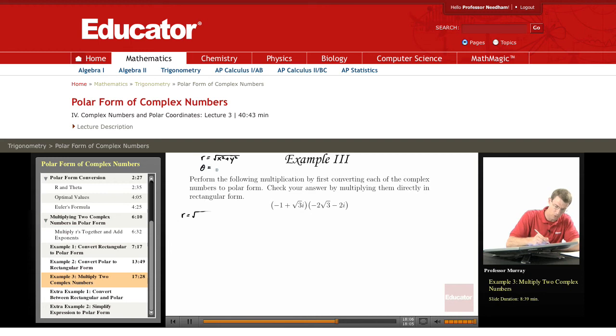Theta is equal to arctan of y over x if x is bigger than zero. And we'll have to add on a pi, the fudge factor pi, if x is less than zero.